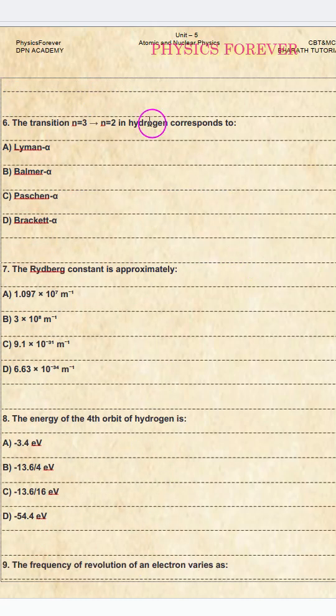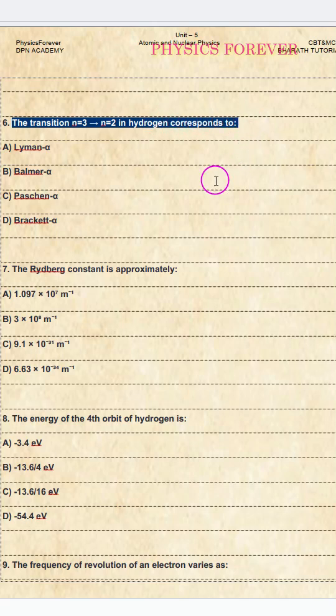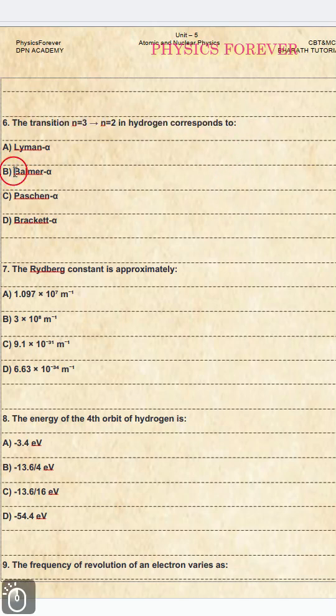Question number six: the transition n = 3 to n = 2 in hydrogen corresponds to? The correct option is B, Balmer alpha.